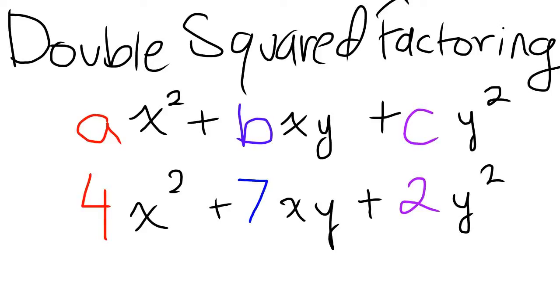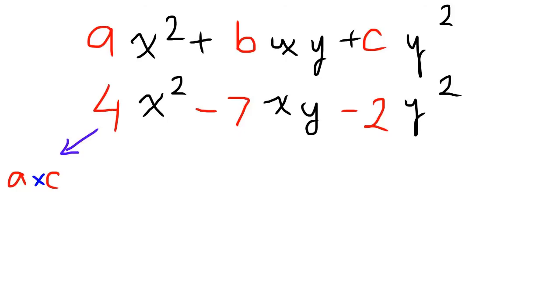Solve for double squared factoring: ax squared plus bxy plus cy squared. Start with 4x squared minus 7xy minus 2y squared.